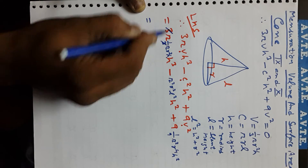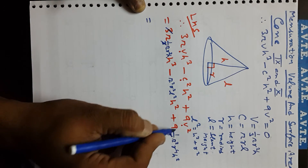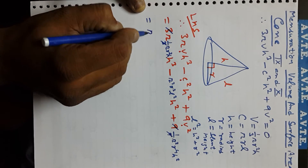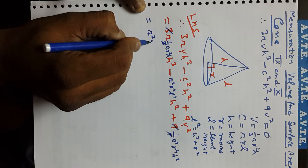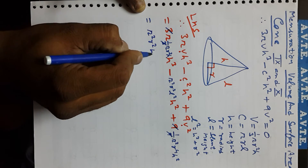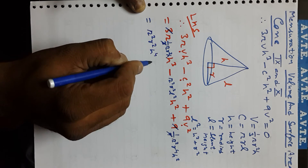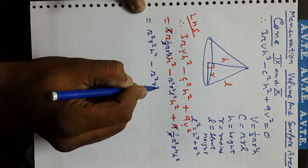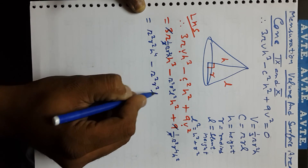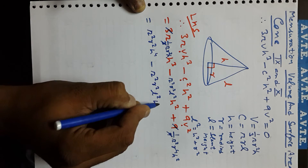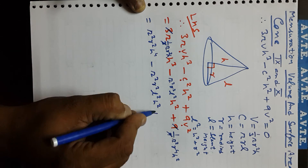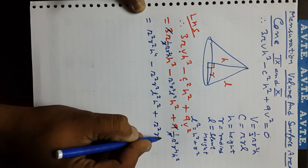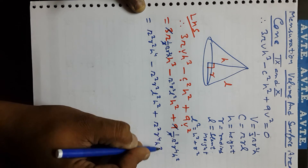We cancel the 3 and the 9, and the result becomes π²r²h⁴ minus π²r²l²h² plus π²r⁴h².